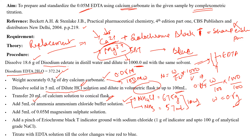From the ammonia buffer, take 5 mL and add it to the conical flask. Then add magnesium sulfate solution. To prepare 0.05 molar magnesium sulfate solution: magnesium sulfate generally exists as heptahydrate (MgSO₄·7H₂O), with molecular weight 246.48. For 0.05 molar, you need approximately 1.2 grams for 100 mL. Weigh out the magnesium sulfate, dissolve it in 100 mL, and take 5 mL for the conical flask.